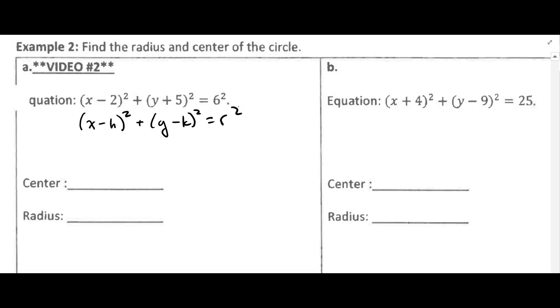So now we can compare these and the center is always the h and k. In our problem here, the h is going to be 2 and the k is going to be negative 5.